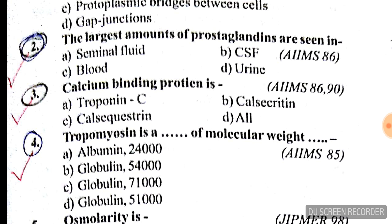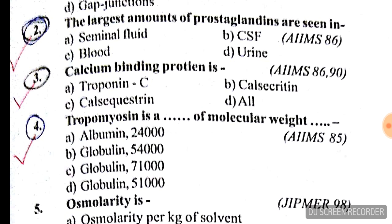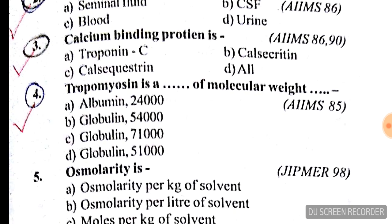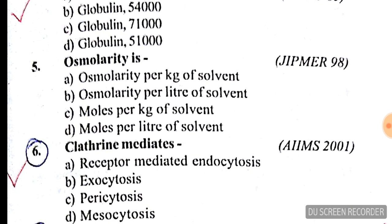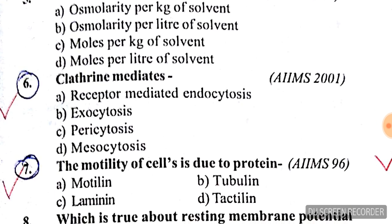Question number 3: calcium binding protein — the answer is troponin C. Tropomyosin is a globulin of 71,000 molecular weight. C is the correct answer.